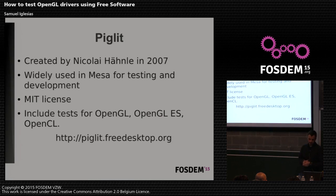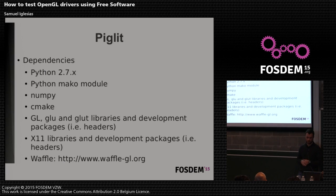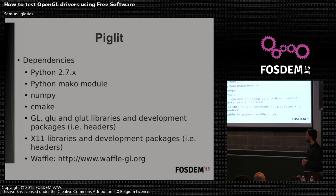So, talking about Piglit — it was created in 2007 and is widely used in Mesa for testing and development. It includes tests for OpenGL, OpenGL ES, and OpenCL. If you want to build and install it on your system, you need to fulfill these dependencies: Python 2.7, the Python mako module that creates source files from templates, NumPy, CMake, GL, GLUT and GLEW libraries and development packages, X11 libraries, and Waffle. Usually, at least in Debian-based distributions, Waffle is not part of the repositories, so you need to build it and install it on your system.